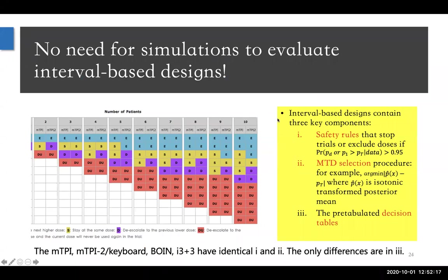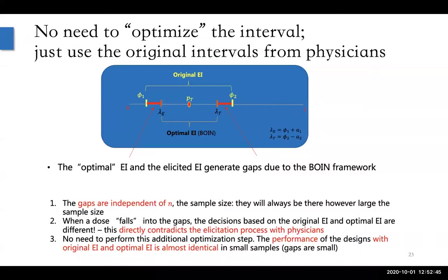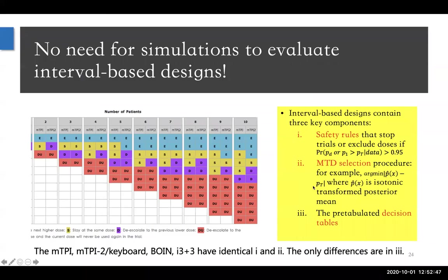One more thing before I go into the simulation results: when designs are so simple, you really don't need to resort everything in the simulation to evaluate them because they're so transparent. The designs I3+3, MTPIs, BOIN, and CCD have three elements that can give you a very quick assessment of how they would perform without even running simulations.